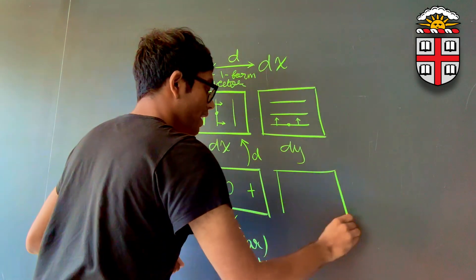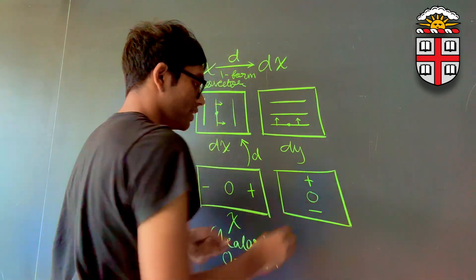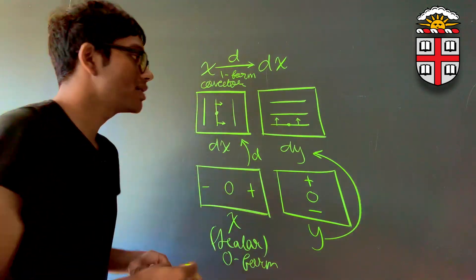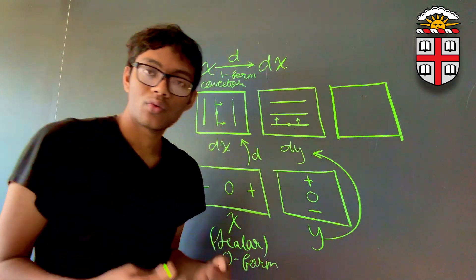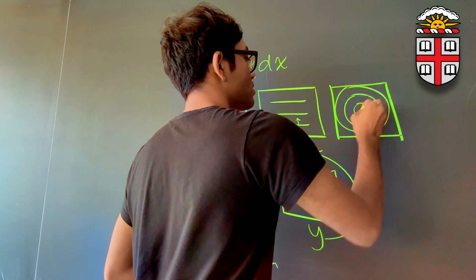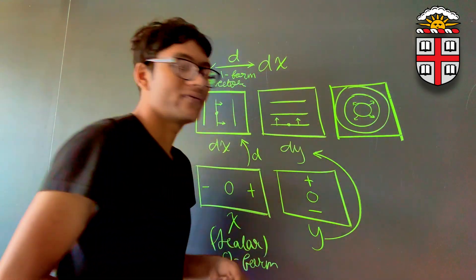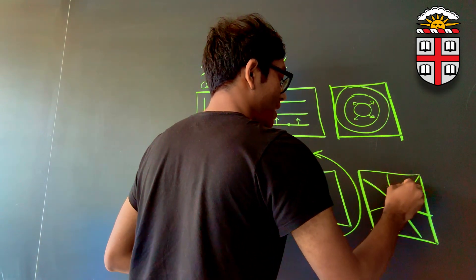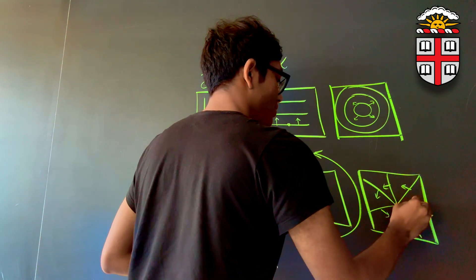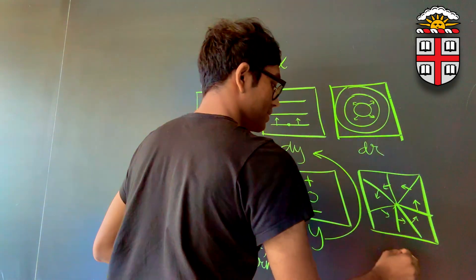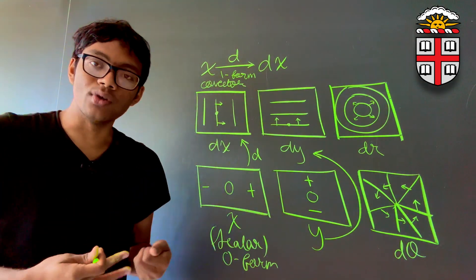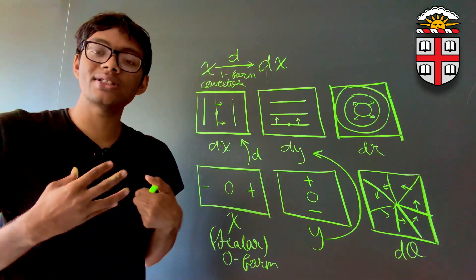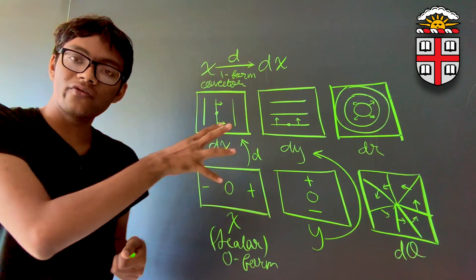Similarly, dy does the exact same thing with the scalar field for y, which goes from minus to 0 to plus, and the differential operator d converts y into this co-vector field. We saw the same thing with dr and d theta. dr had contours that were circles increasing in this direction. And d theta looks like radially increasing lines, since theta increased as we went from 0 to 2π — that's the direction of increasing ascent.